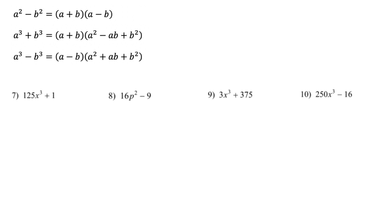Number 7: 125x cubed plus 1. When factoring, we first look for a common factor — there isn't one here. Since it's two terms, we check if it fits one of the special situations. 125 is a perfect cube — that's 5 cubed — so 125x cubed means a equals 5x.